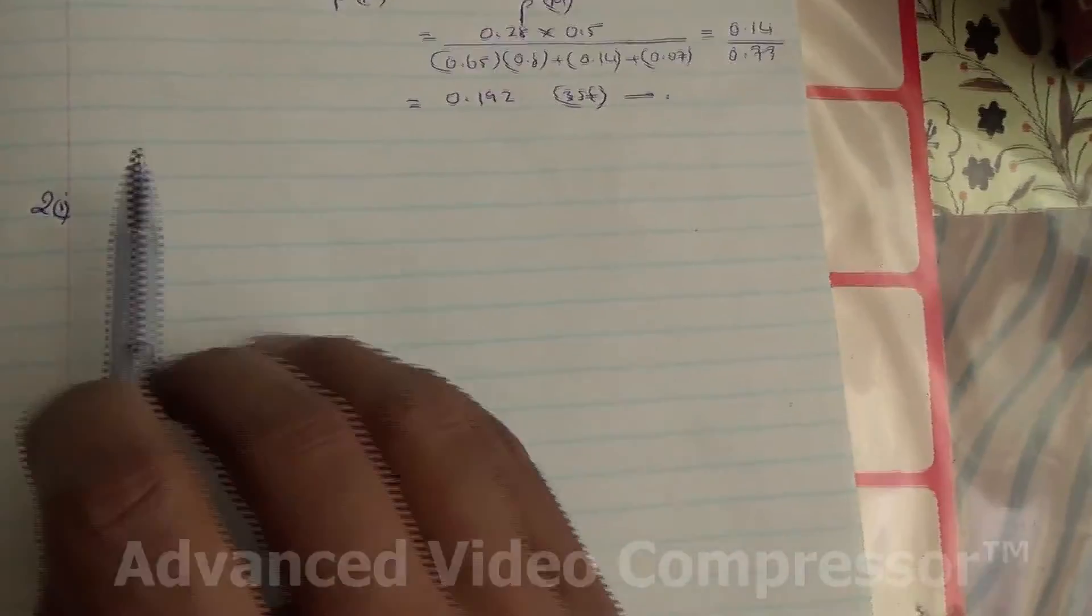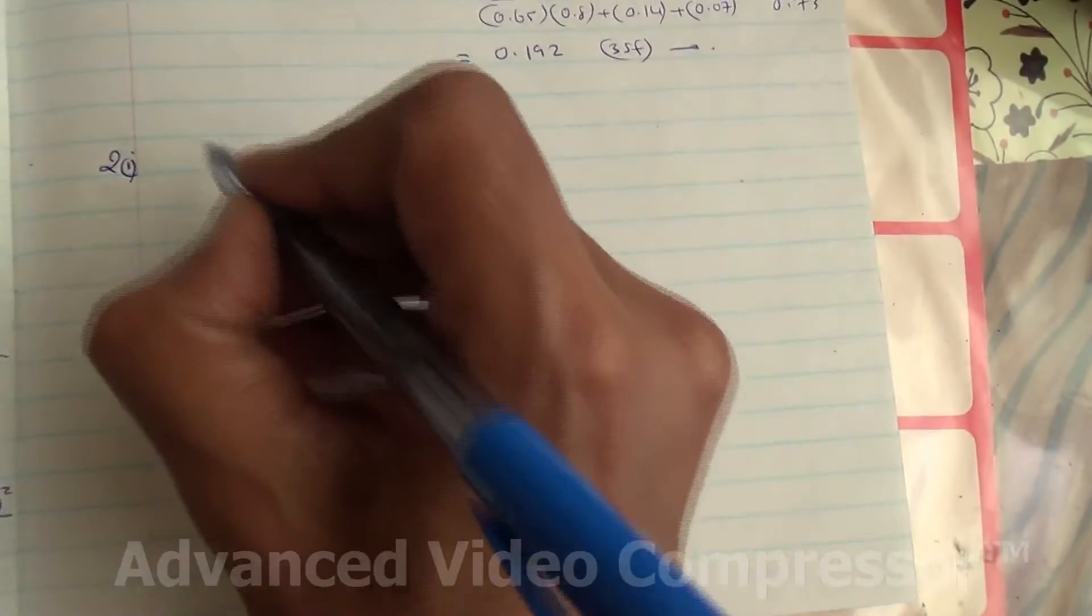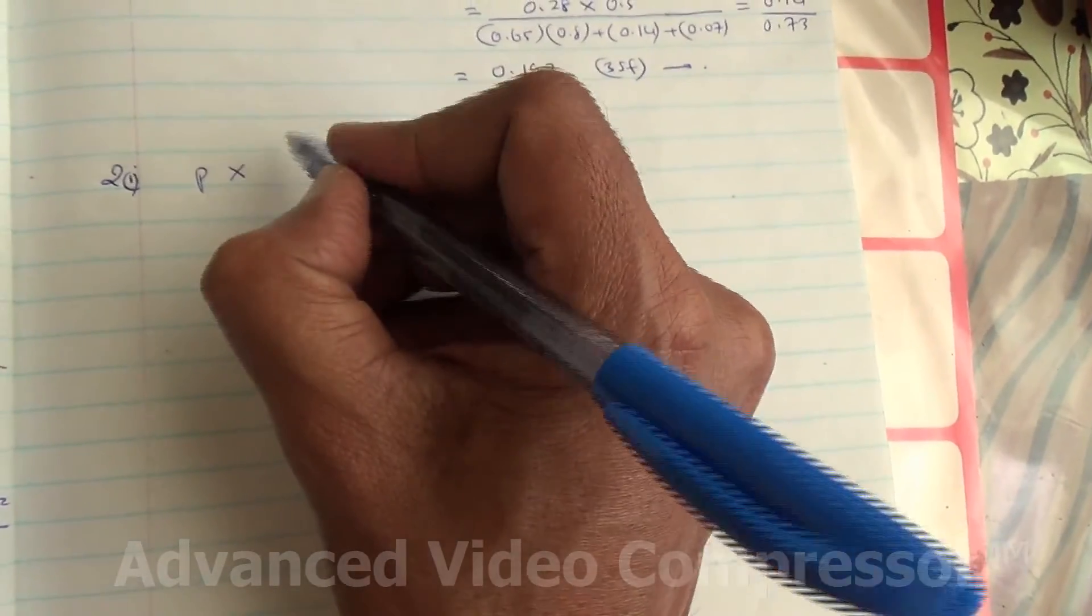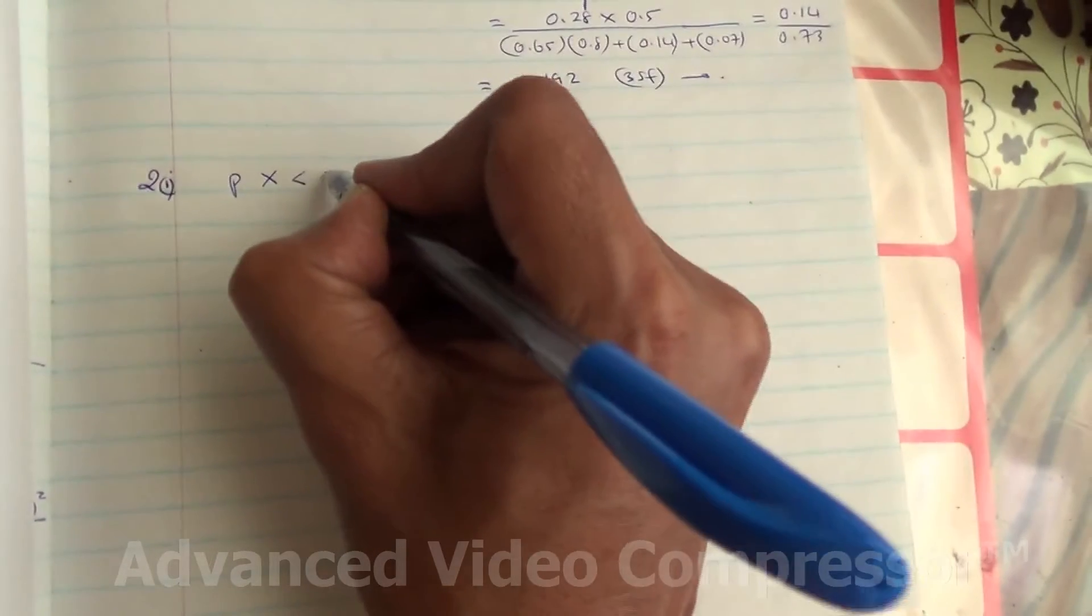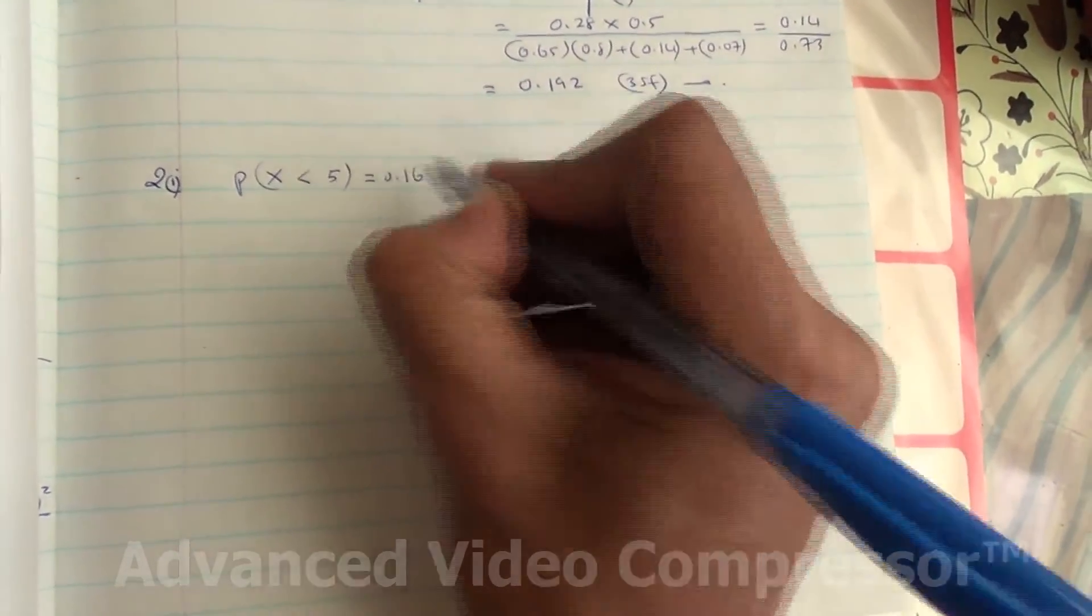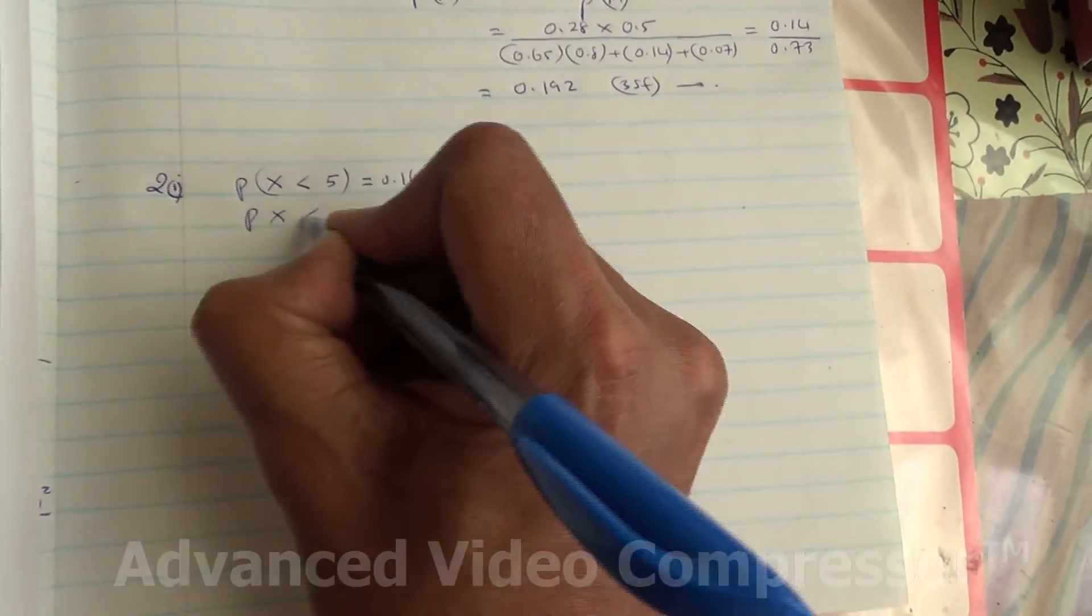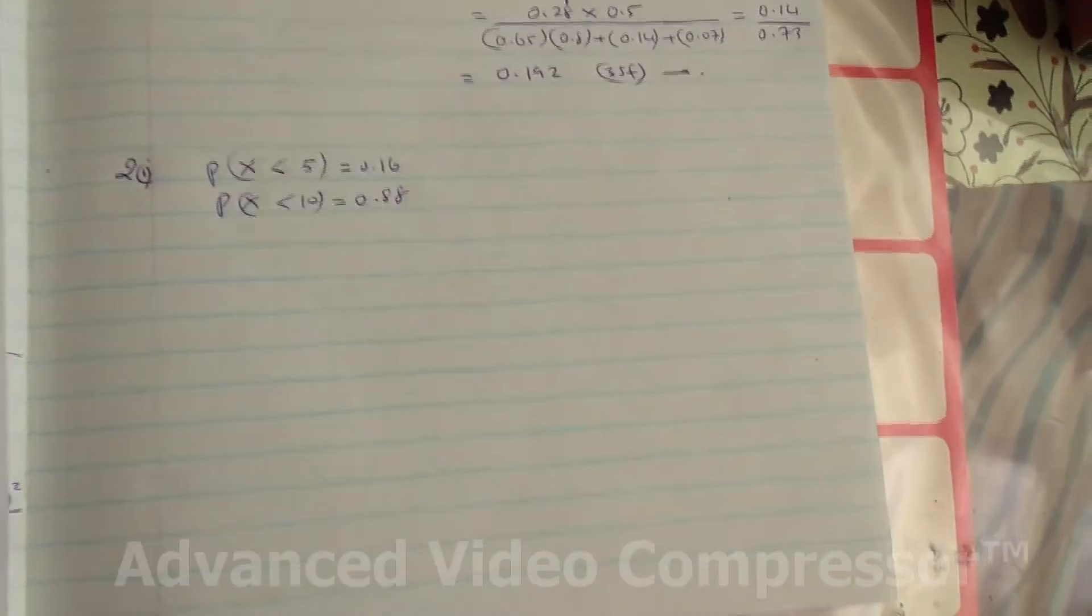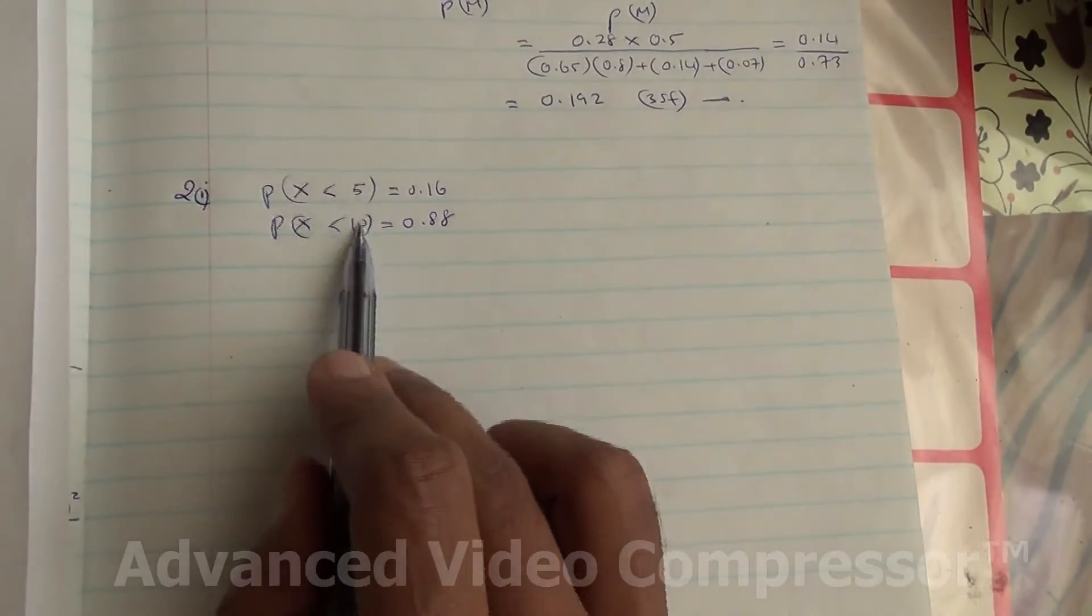Okay, so let's do it. For the first part, the probability of waiting less than 5 minutes, X being less than 5 minutes, is going to be 0.16. The probability of waiting less than 10 minutes is 0.88. We need to find the probability between 5 and 10.